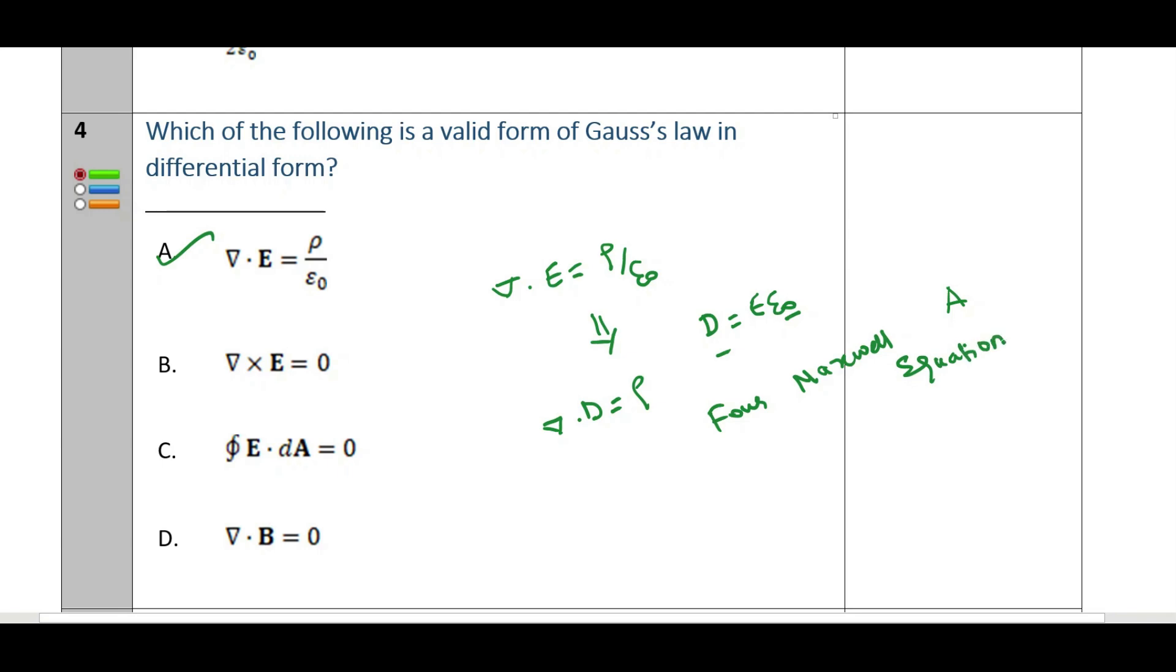What are the four Maxwell equations? One is del dot D equals rho. Then del dot B equals zero. Then del cross E equals minus ∂B/∂t. Then del cross H equals j plus ∂D/∂t. These are all most important for time varying fields. In the upcoming classes we are going to discuss this. The correct option will be A.